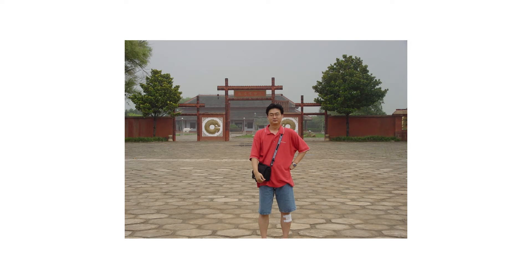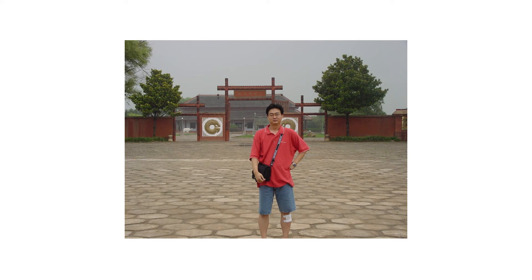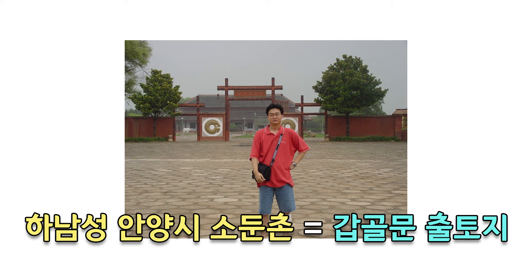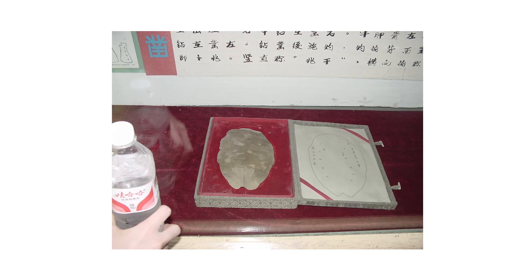이 갑골문이 발견된 것이 지금의 하남성 안양시 소둔촌이에요. 거기가 상나라, 또 다른 말로 은나라라고도 하잖아요. 왜냐하면 마지막 왕인 반경이라는 왕이 마지막 도읍지로 은을 세웠고, 273년 후에 주나라에 의해 멸망당하게 됩니다. 마지막 도읍지가 은이고 은이 텅텅 비었다 해서 은허라고 하죠. 그래서 은나라, 상나라 이렇게 부릅니다. 여기가 하남성 안양시 소둔촌에 있는 갑골문 출토지입니다. 보통 사람들이 거북이라고 하면 이만한 걸 생각하는데 보통 어른 손바닥만한 거북이만 썼습니다.